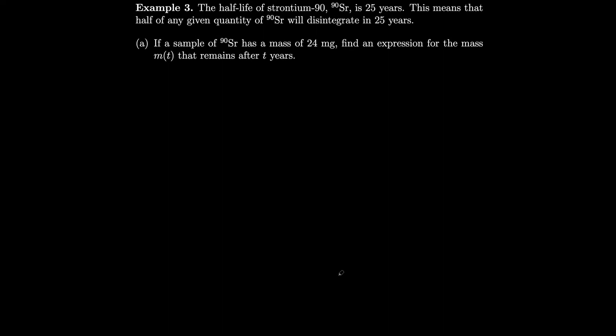The half-life of strontium-90 is 25 years. This means that half of any given quantity of strontium-90 will disintegrate in 25 years. So if we have a sample of strontium-90 and it has a mass of 24 milligrams, let's find an expression for the mass m that will remain after t years. So first, let's look at m of zero. At the start, we haven't even started disintegrating yet. So we're at 24 milligrams. That's after zero years.